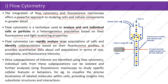Flow cytometry provides quantitative data about cell populations in terms of size, complexity, and fluorescence intensity. Once subpopulations of interest are identified, individual cells can be isolated and further analyzed using fluorescence microscopy to study specific cellular features or behaviors — for example, to visualize the precise localization of labeled molecules within cells, providing insights into subcellular structures and interactions.